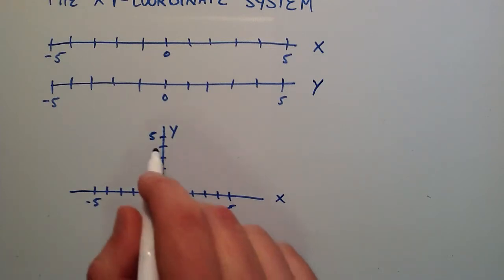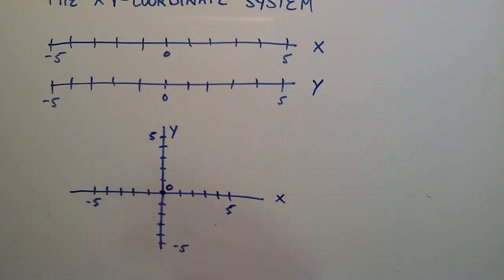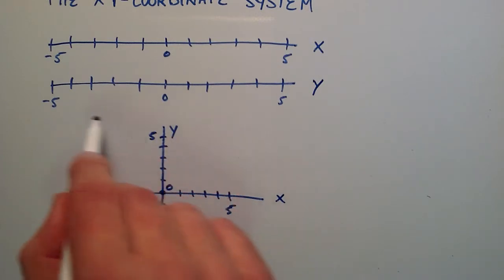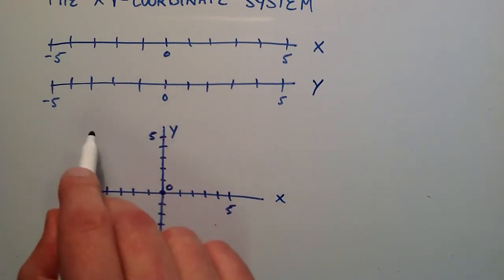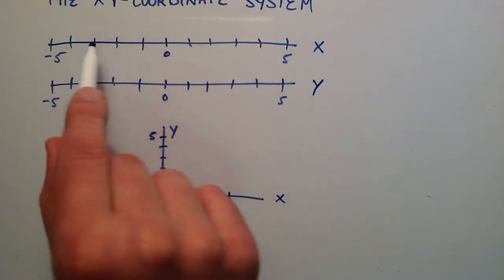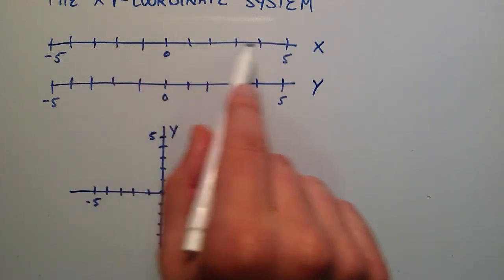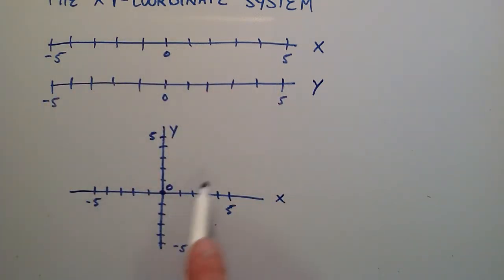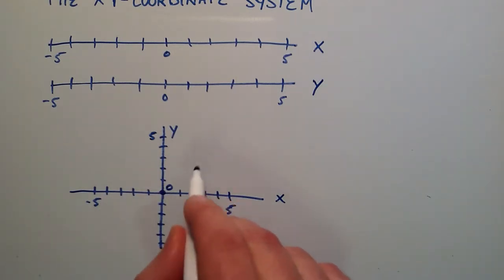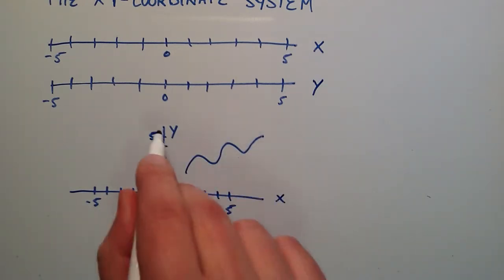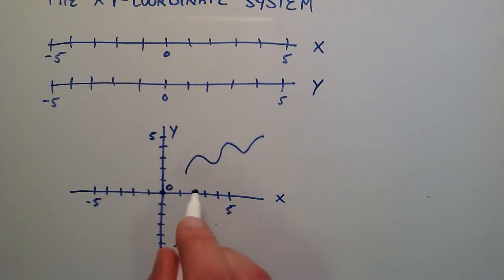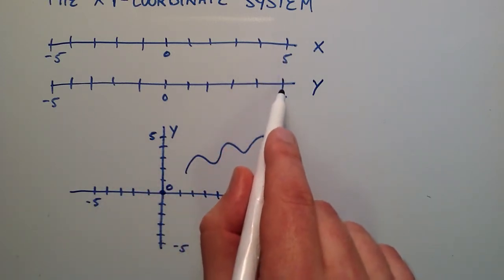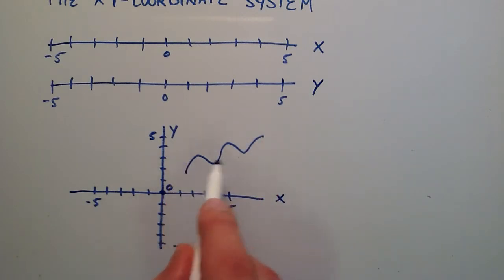The combination of the x and y axes allows us to plot points and draw graphs in basically a two-dimensional space. We can treat this like a piece of paper, whereas with a single number line we can only plot points or line segments in one direction. But with the x-y coordinate system we can add dimension — for instance, we could plot a squiggly shape like this, which we have no way to do on just a single number line.